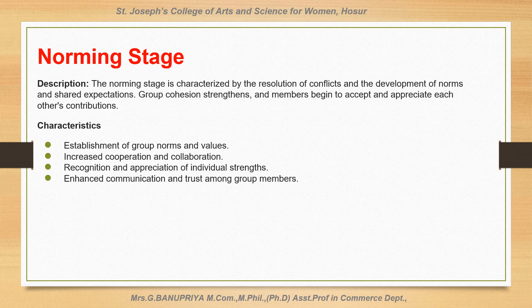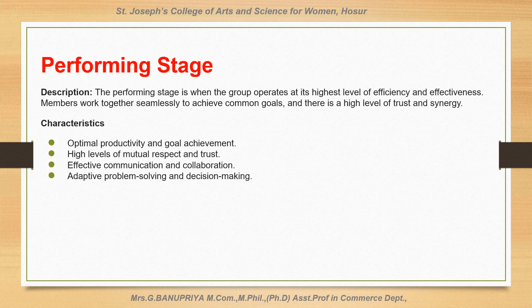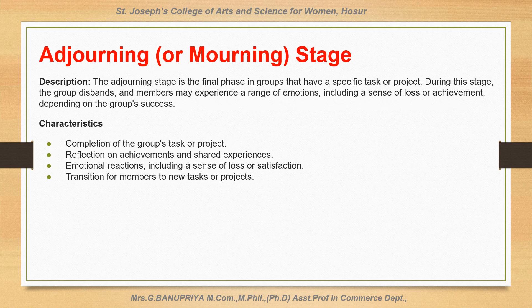Norming stage: the norming stage is characterized by resolution of conflicts and the development of norms and shared expectations. Group cohesion strengthens and members begin to accept and appreciate each other's contributions. Performing stage: the performing stage is when the group operates at its highest level of efficiency and effectiveness. Members work together seamlessly to achieve common goals and there is a high level of trust and synergy. Adjourning stage: also referred to as the mourning stage, this is the final phase for groups that have a specific task or project. The group disbands and members may experience a range of emotions, including a sense of loss or achievement, depending on the group's success.